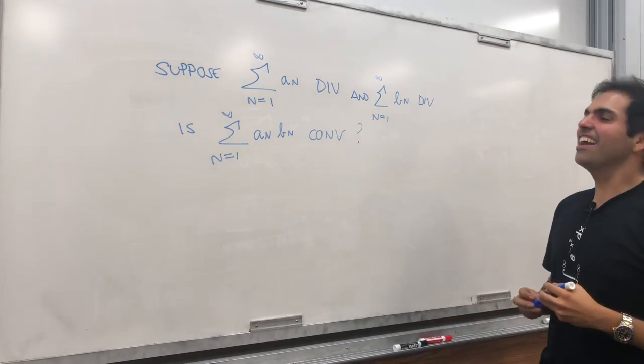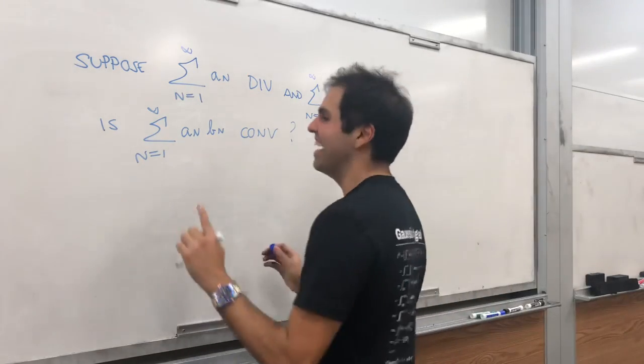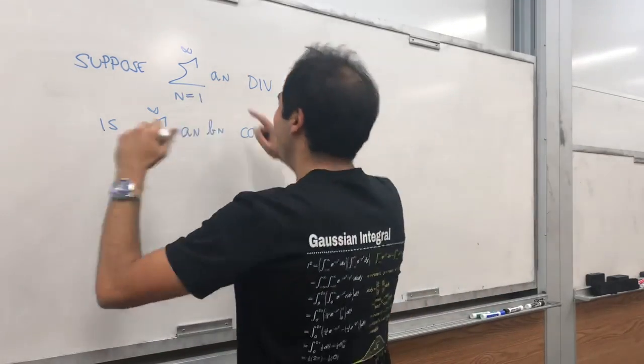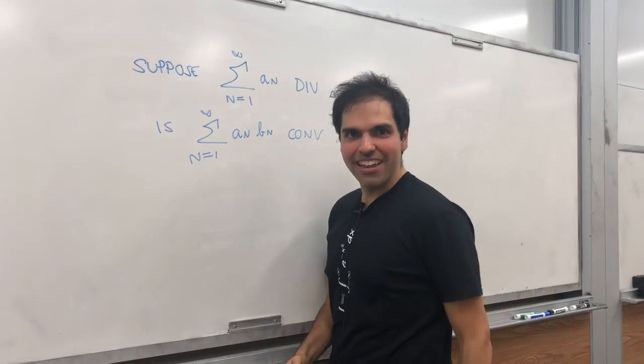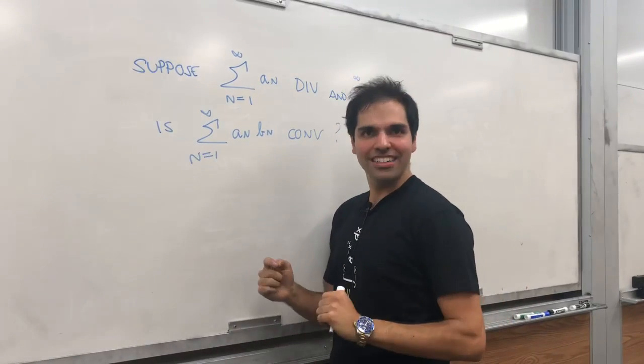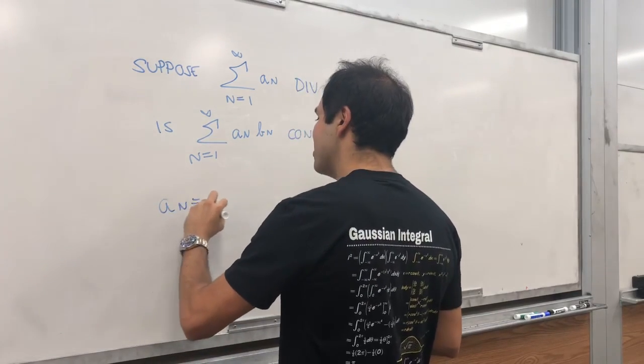Oh, yes! Show me the example. So let a_n, well, what is the prime example of a divergent series? It's the harmonic series. So consider a_n equals to 1 over n.